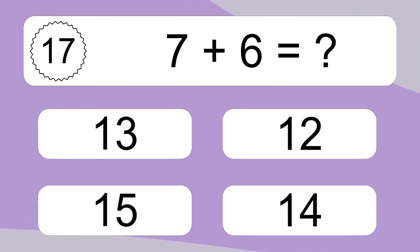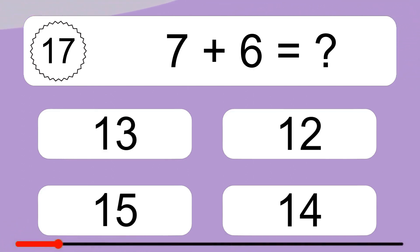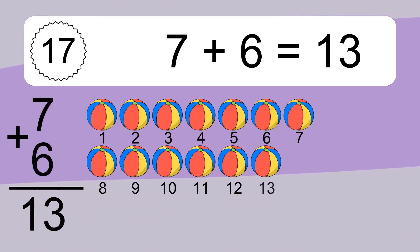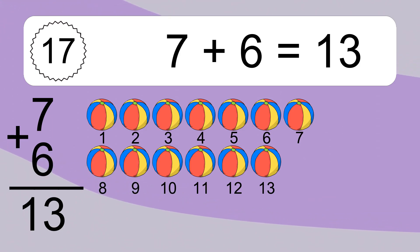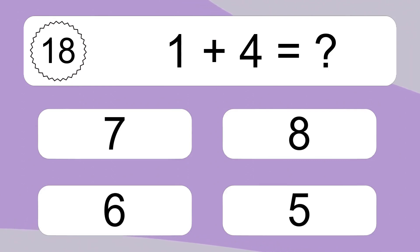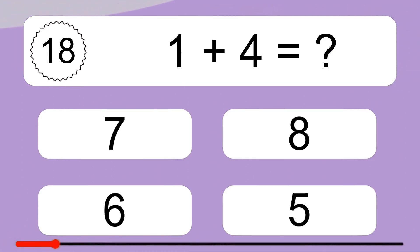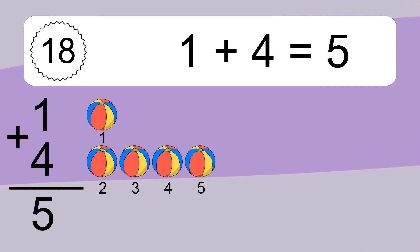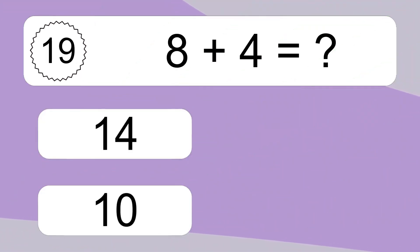7 plus 6 equals what? 7 plus 6 equals 13. Let's count it: 1, 2, 3, 4, 5, 6, 7, 8, 9, 10, 11, 12, 13. 1 plus 4 equals what? 1 plus 4 equals 5. Let's count it: 1, 2, 3, 4, 5.